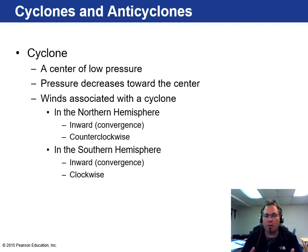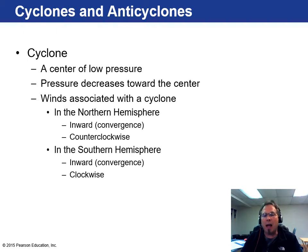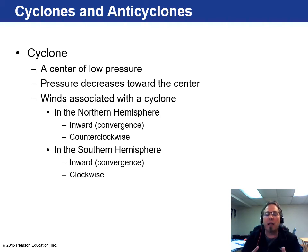A cyclone or low pressure center has pressure that decreases towards the center. In the northern hemisphere, cyclone winds flow inwards and counterclockwise; in the southern hemisphere, inwards and clockwise. This difference is largely due to the Earth's rotation — it's simply the nature of how winds rotate on a rotating planet.